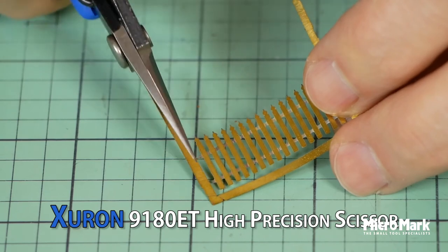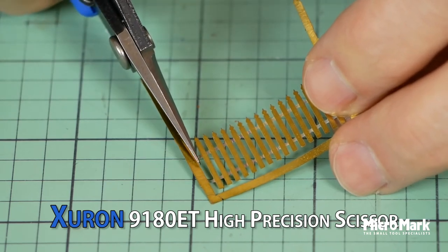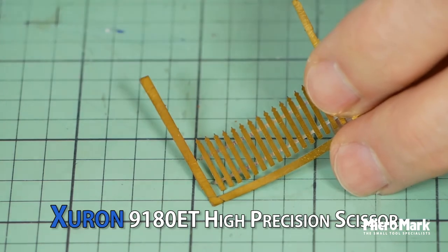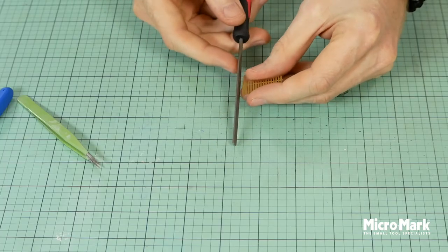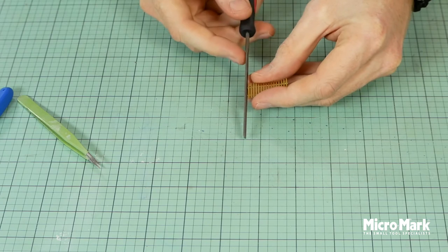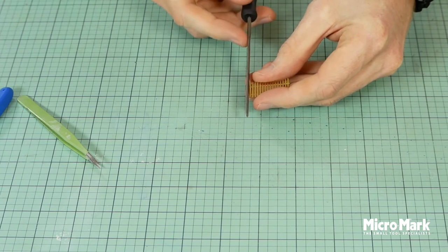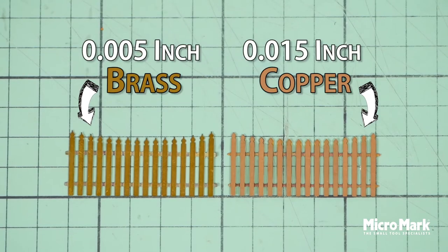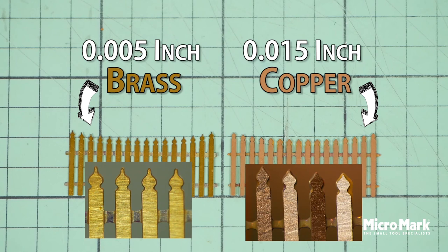I use a good pair of scissors with a very fine tip which is perfect for cutting these very small parts and you'll also need some small files to clean up the edges. Here you can see the difference between a 0.015 inch thick piece of copper and a 0.005 inch piece of brass. You'll soon discover if you have any designs with very fine details you'll get better results using thinner material rather than the thicker stuff.